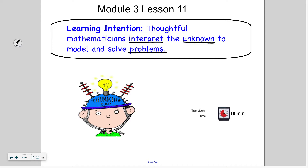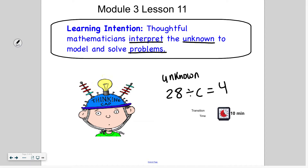Remember, we can use variables to represent the unknown. A variable is just a letter. For example, 28 divided by C equals 4. C represents 7 in this problem because it's unknown until we solve, and we can solve for C and realize that C equals 7.